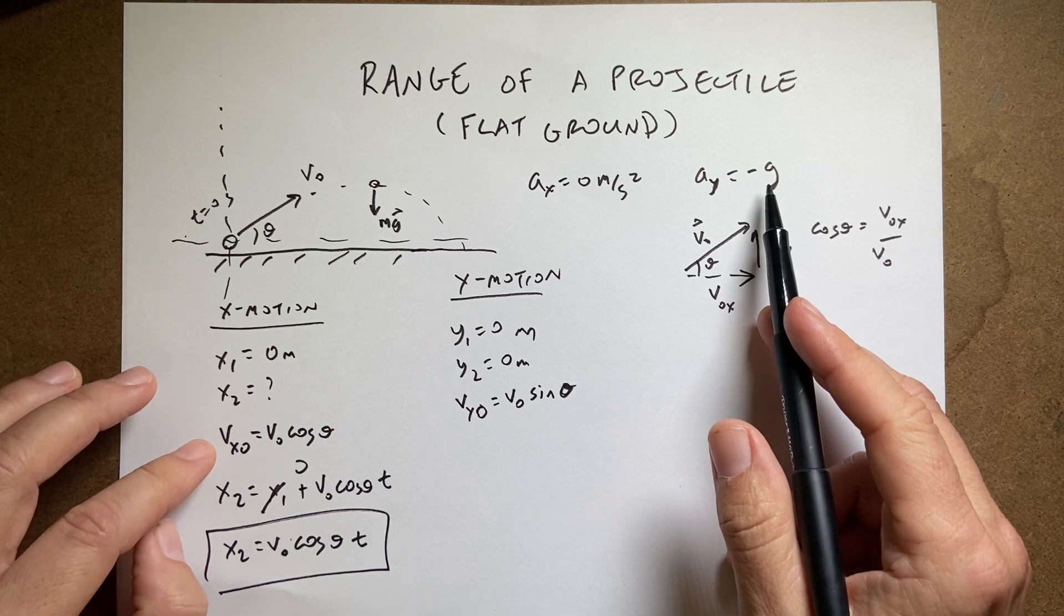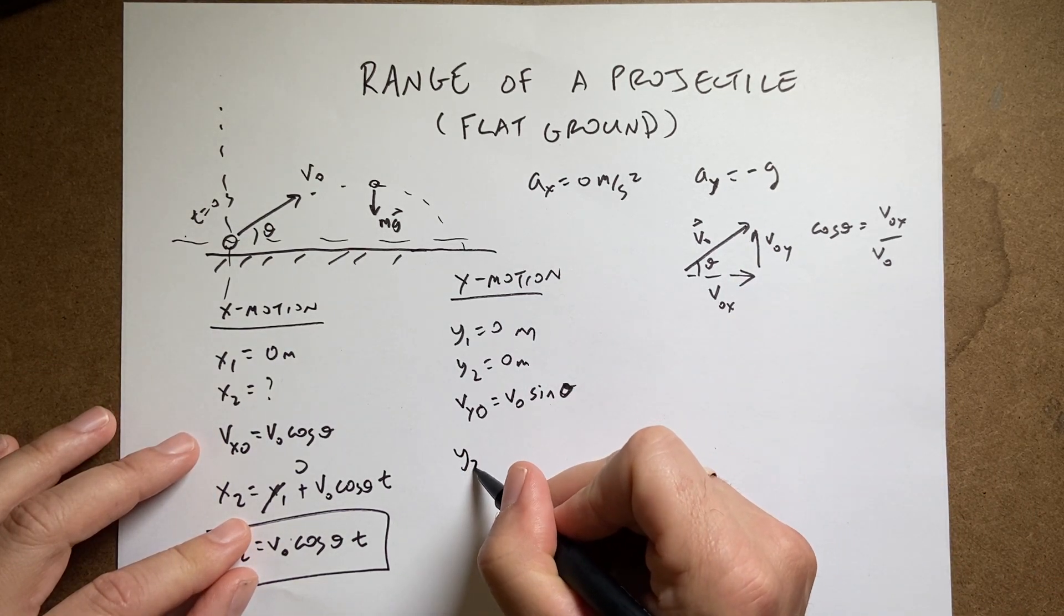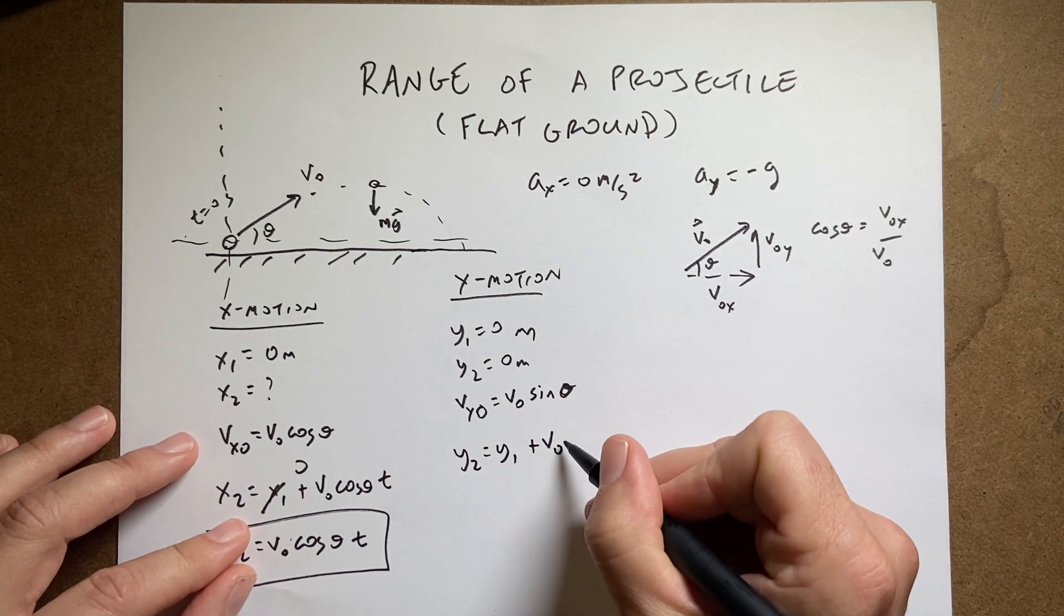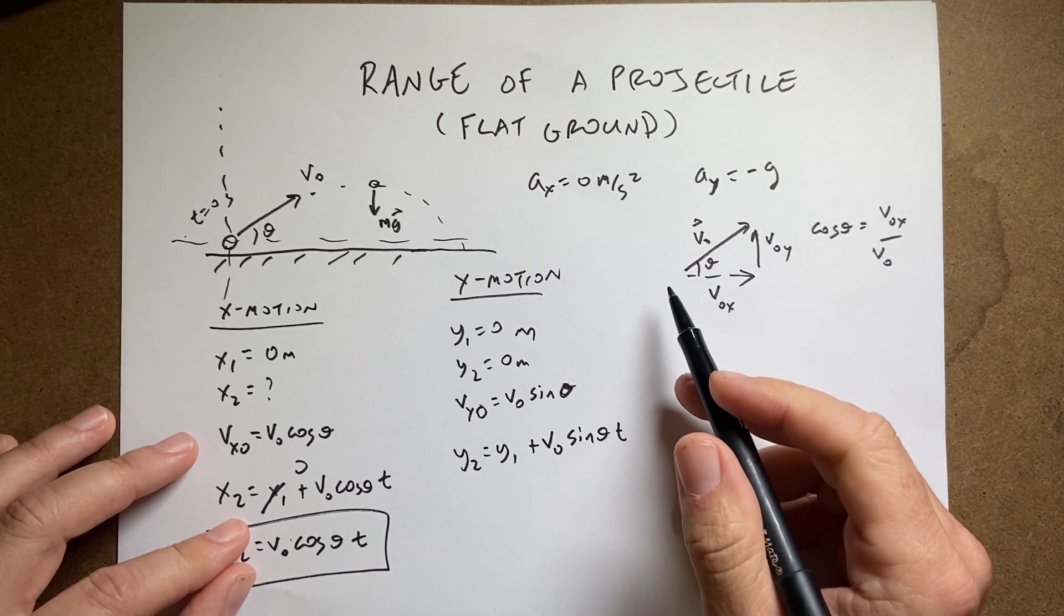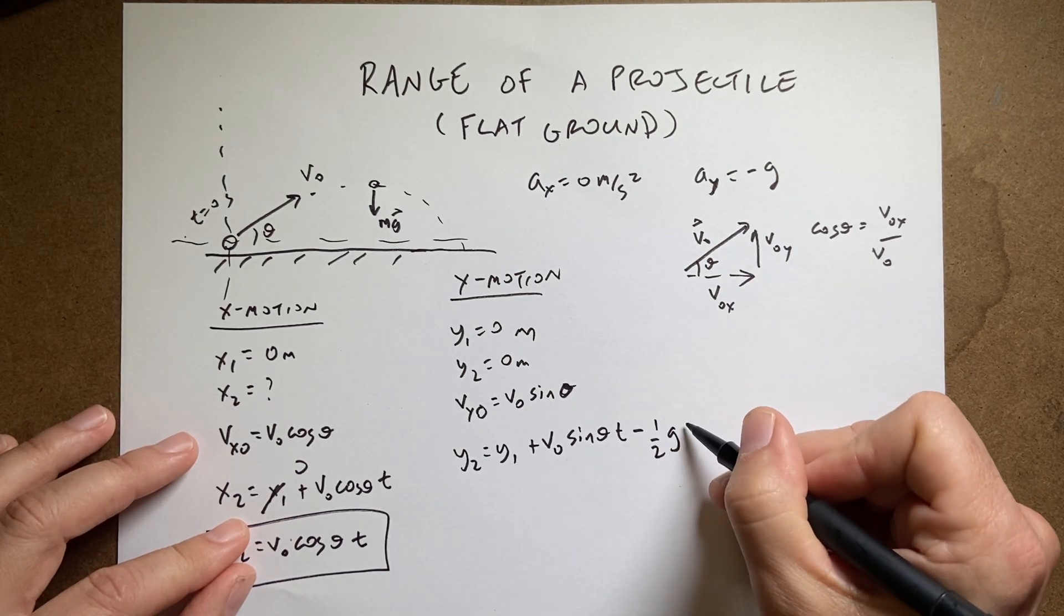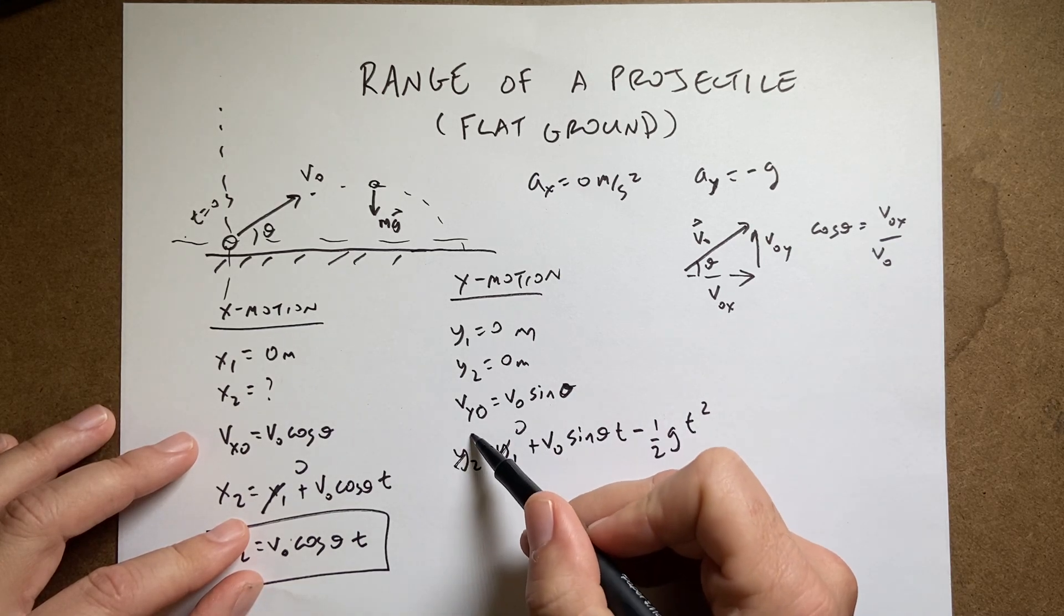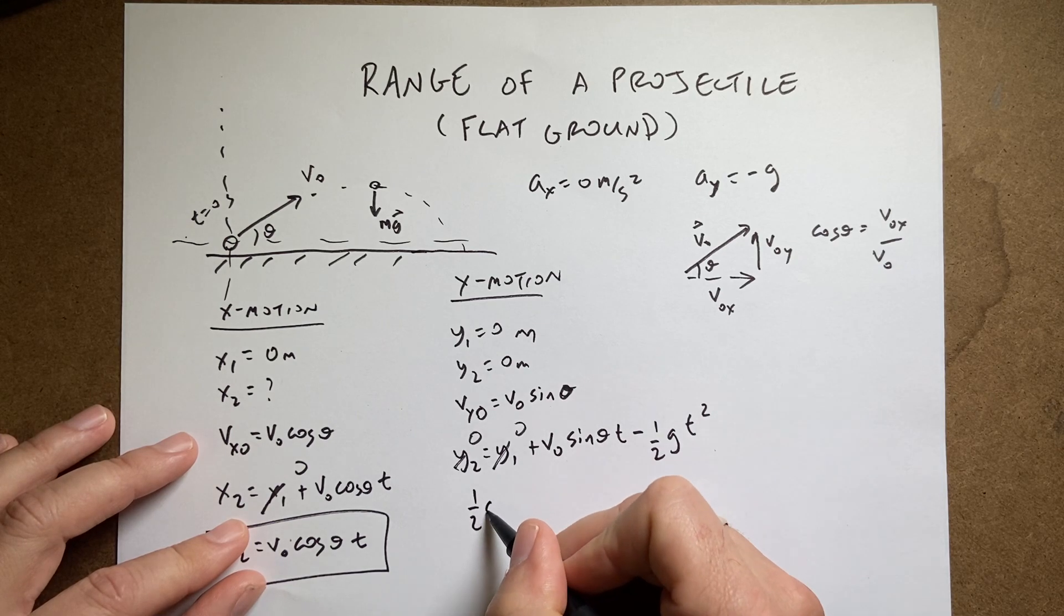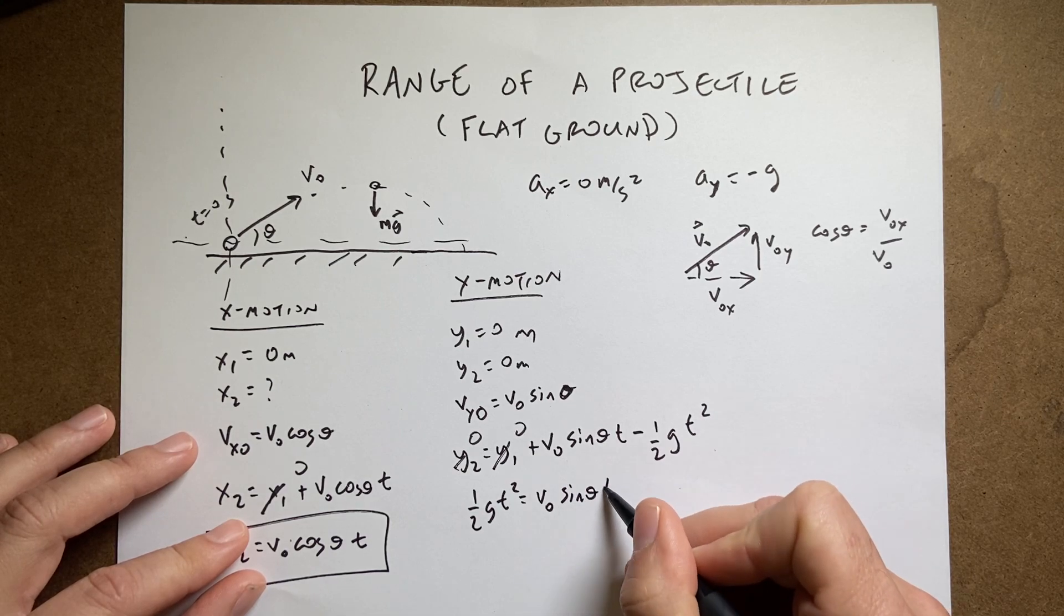Now, I do have an acceleration of negative g. So in one dimension, the kinematic equation for y is going to be y2 equals y1 plus initial y velocity, which is v0 sine theta t plus one half a t squared. So we have negative g. So it's negative one half g t squared. So that's zero and that's zero. If I add one half g t squared to both sides, I get one half g t squared equals v0 sine theta t.